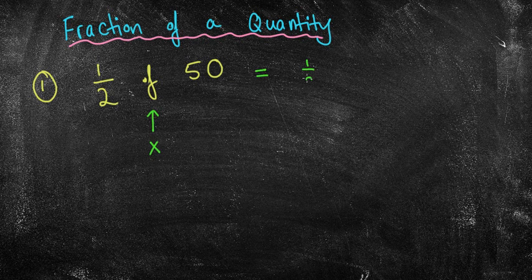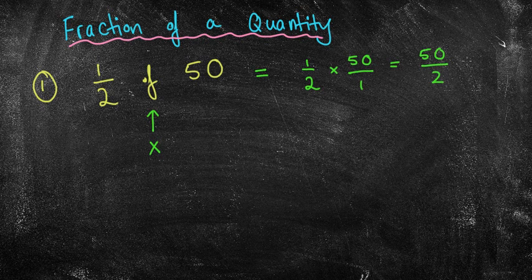So what I'm actually doing is a half times 50. Now, the last lesson we looked at multiplying our fractions. So if I'm looking at multiplying this fraction, I'm simply going to put this over 1. 1 times 50 is 50. 2 times 1 is 2. And 50 divided by 2 is equal to 25.